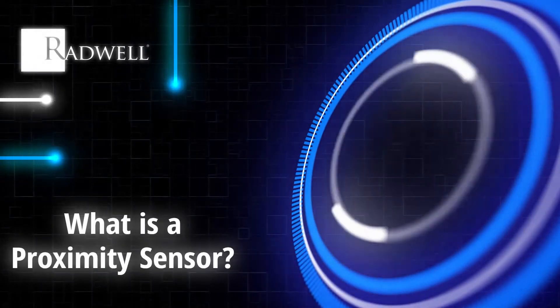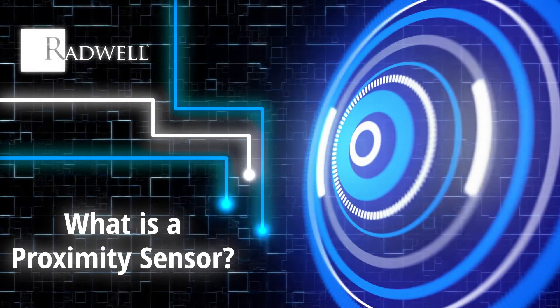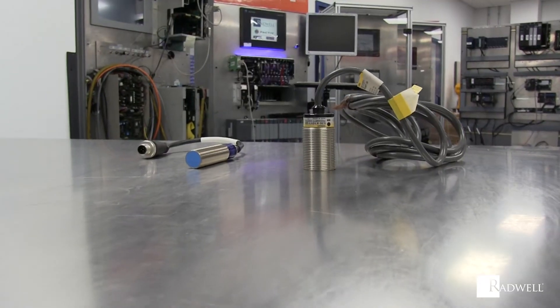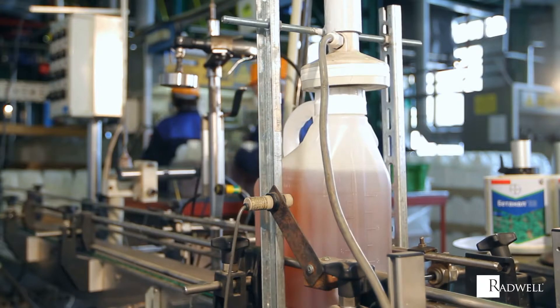What is a proximity sensor? A proximity sensor is a non-contact sensor used to detect the presence, absence, position, direction, velocity, and physical properties of an object.